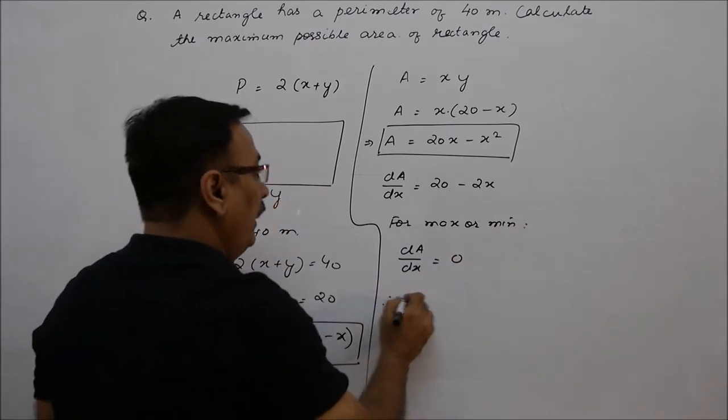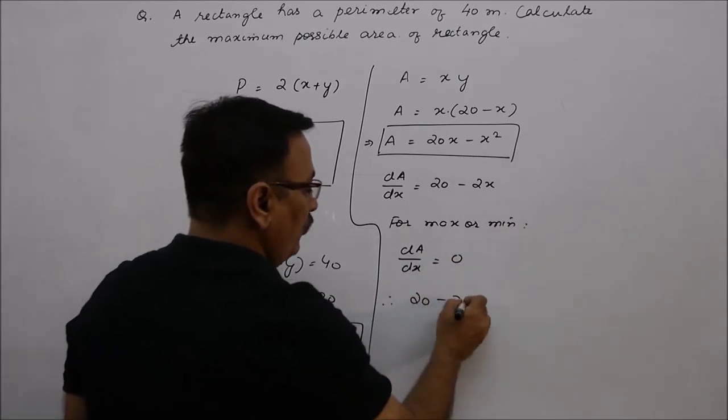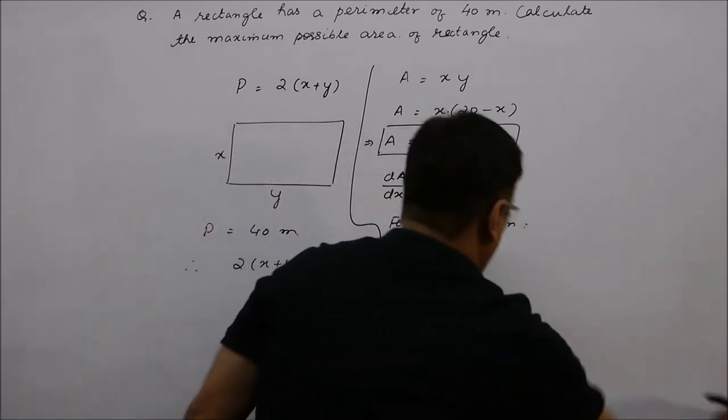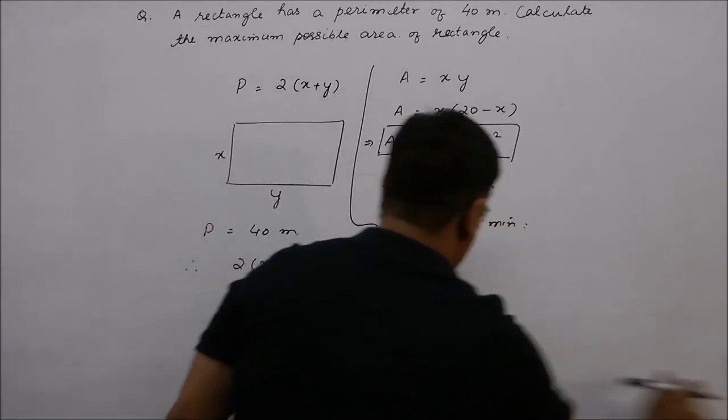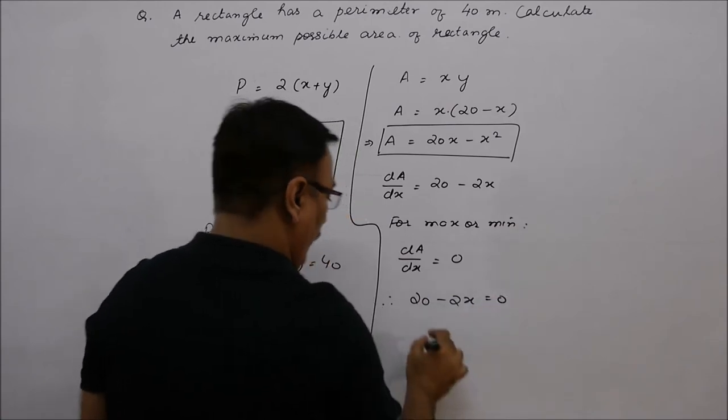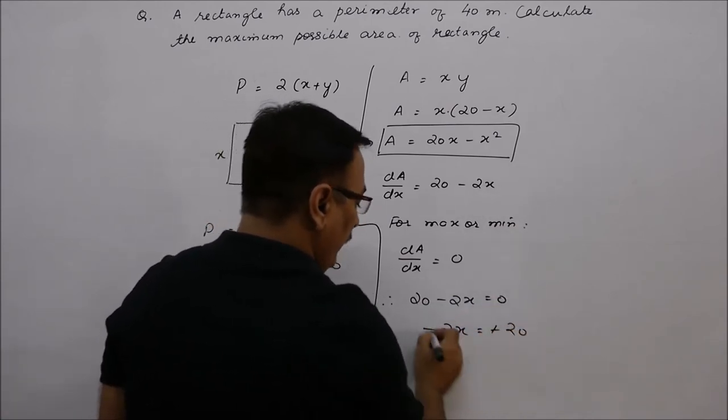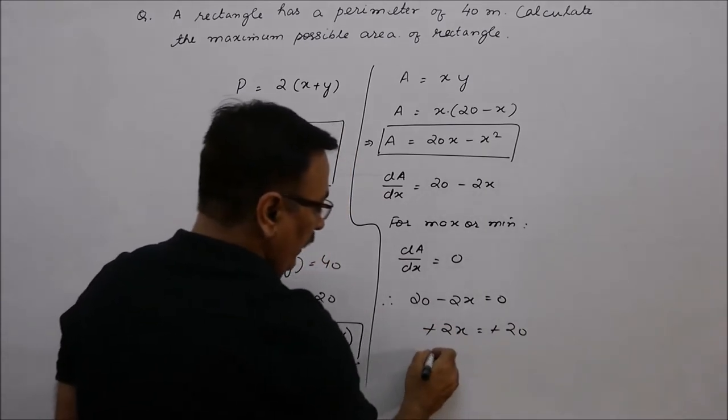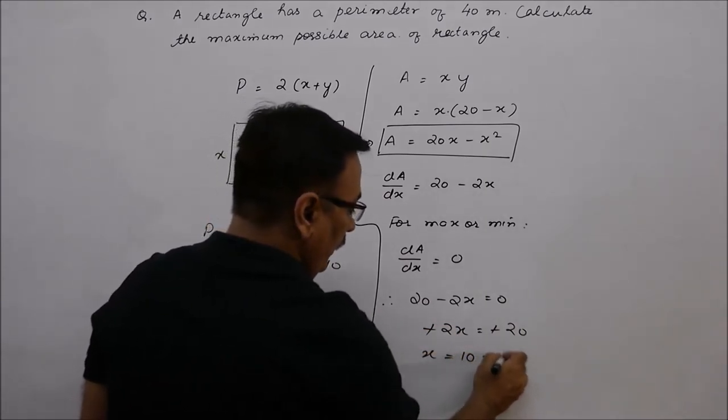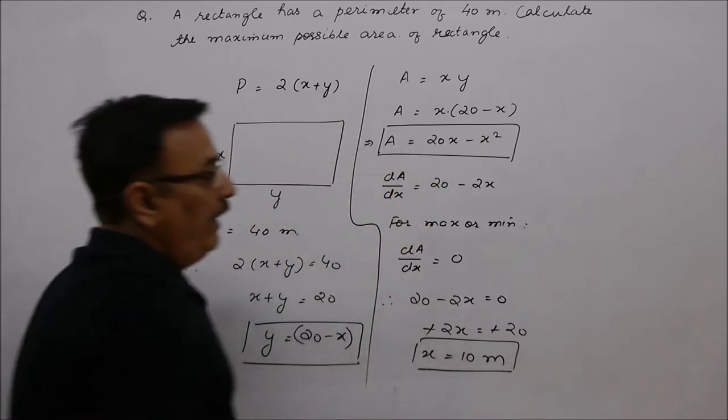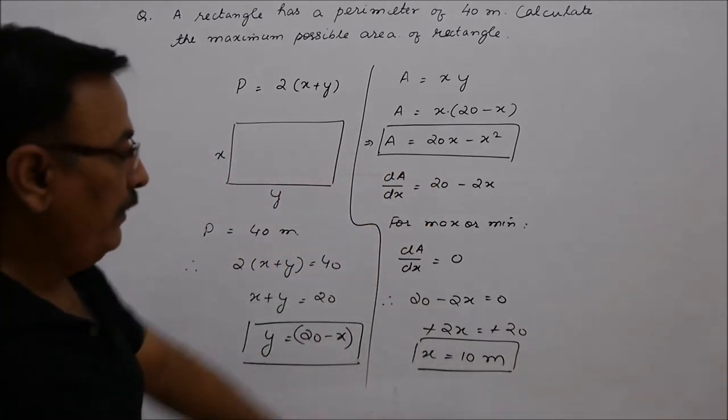So therefore, we have 20 minus 2x equals 0. This gives us minus 2x equals minus 20, so x equals 10 meters.